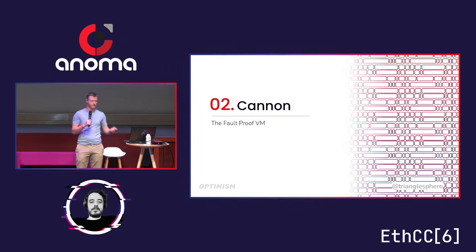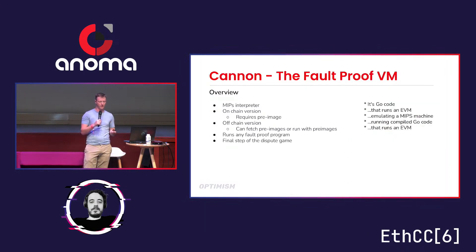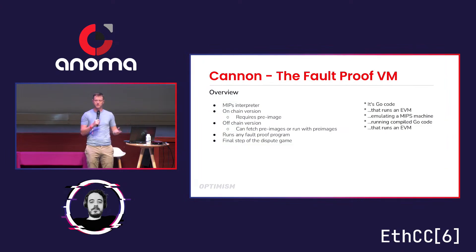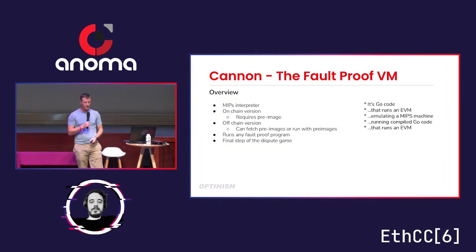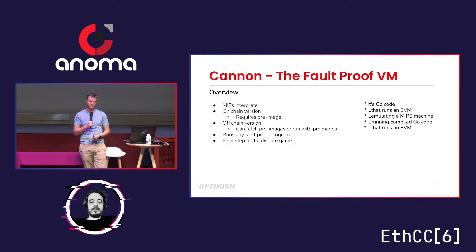That's the fault proof program that runs inside Canon. Canon is a bunch of things wrapped up in one — it's a MIPS interpreter with an on-chain version and an off-chain version. The on-chain version is deterministic, needs to have state, and doesn't touch the network. The off-chain version can run in a mode similar to on-chain, but there's also a mode where it fetches pre-images. The off-chain component handles step generation, and then the on-chain component only ever actually executes a single MIPS instruction — not the entire history of the program, just this one cheap instruction.